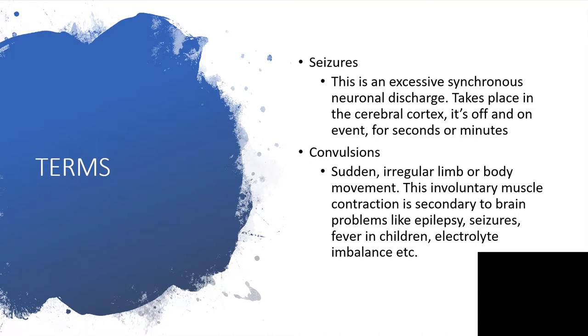We are going to define some terms. When you hear the word seizures, that is an excessive synchronous neuronal discharge and it takes place in the cerebral cortex. It is an off and on kind of event and it lasts for seconds or few minutes.